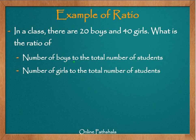In this video, we are going to learn a simple example of how to calculate ratio from given numbers. Our problem statement is: in a class, there are 20 boys and 40 girls.